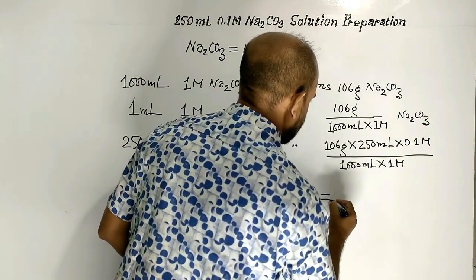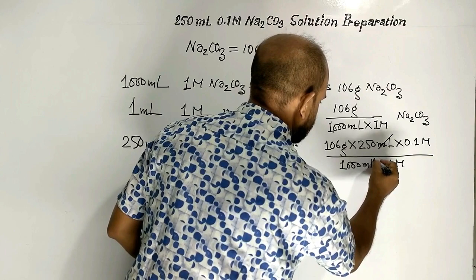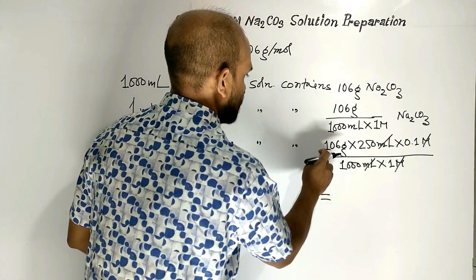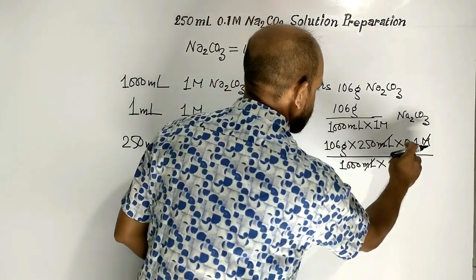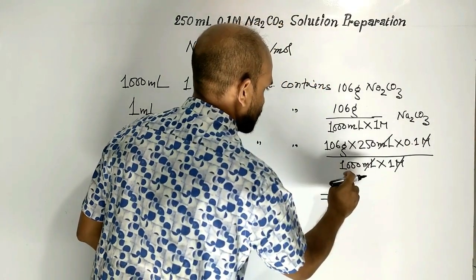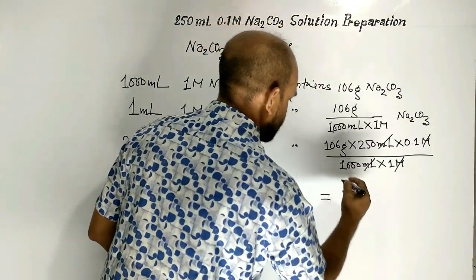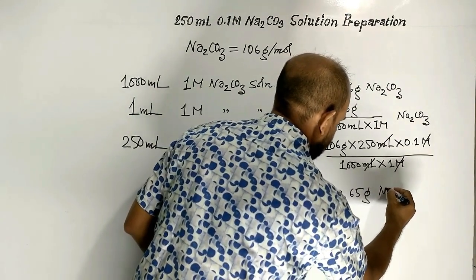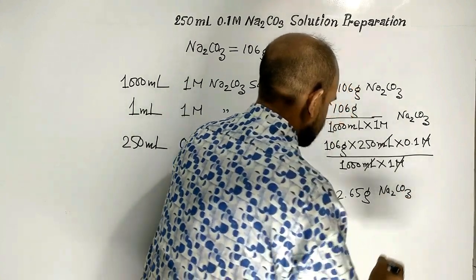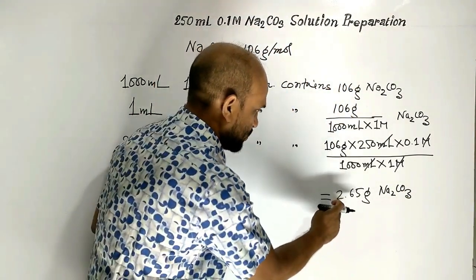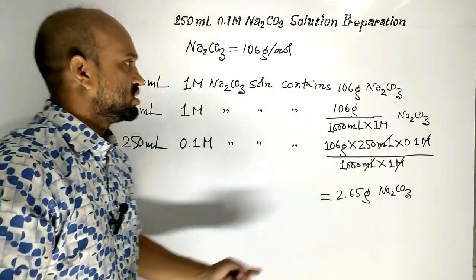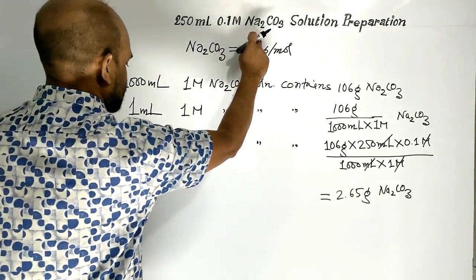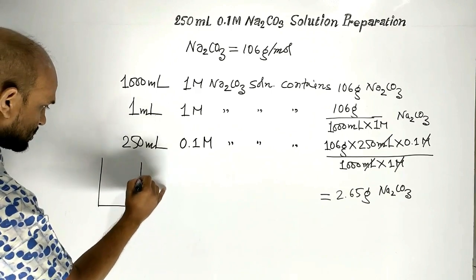The milliliter units cancel and the molar units cancel. We are left with 106 multiplied by 250 multiplied by 0.1 divided by 1000, which equals 2.65 gram of sodium carbonate. That is, we need 2.65 gram of sodium carbonate to prepare 250 milliliter 0.1 molar sodium carbonate solution.